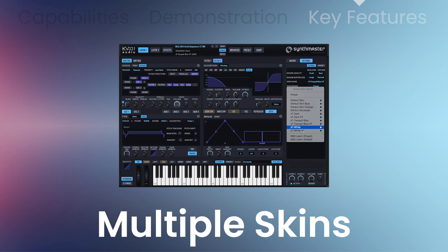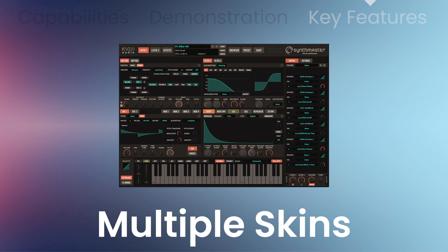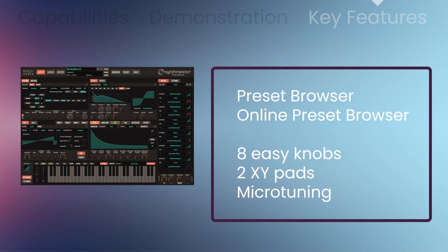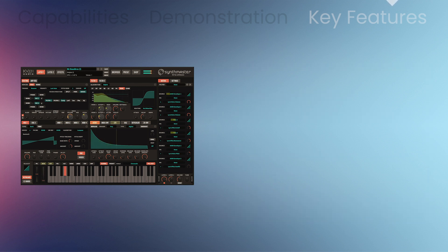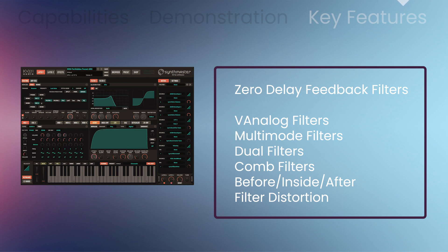It comes with a wealth of features including semi-modular architecture, massive modulation architecture, a powerful arpeggiator, and a rich set of effects. SynthMaster 2.9 also comes with three different skins and different color variations. There are 1400 factory presets from a world-class team of sound designers. You'll find easy parameters with eight easy knobs and two XY pads that can be freely assigned as modulation sources. Virtual analog filters are modeled after the famous ladder filter; multi-mode filters, dual filters, comb filters, and before/inside/after filter distortion are included.